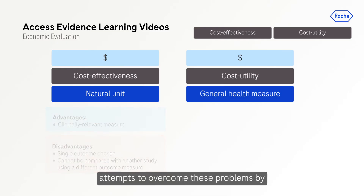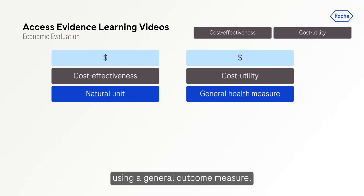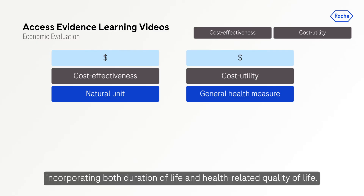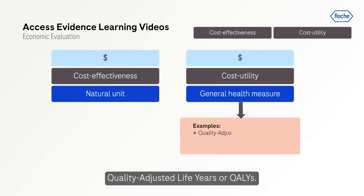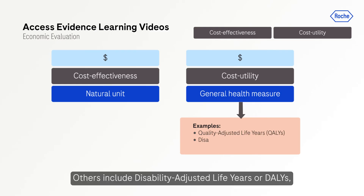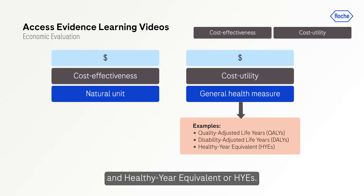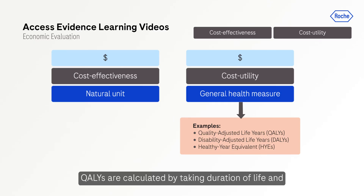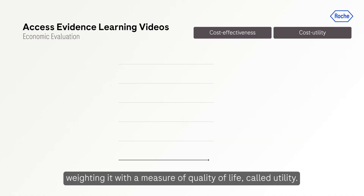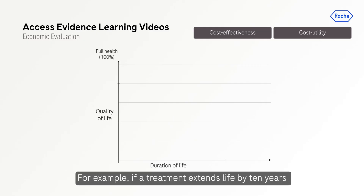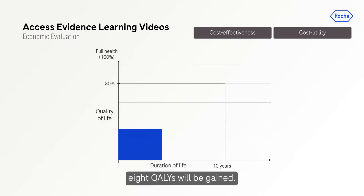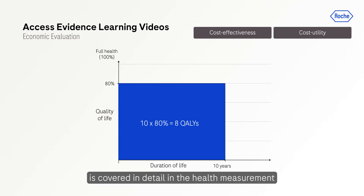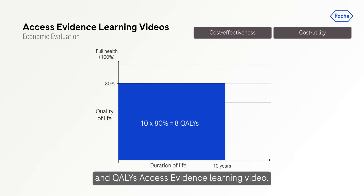Cost-utility analysis attempts to overcome these problems by using a general outcome measure incorporating both duration of life and health-related quality of life. The most commonly used measure is quality-adjusted life years, or QALYs. Others include disability-adjusted life years (DALYs) and healthy year equivalents (HYEs). QALYs are calculated by taking duration of life and weighting it with a measure of quality of life called utility. For example, if a treatment extends life by 10 years with a quality of life that is 80 percent of full health, eight QALYs will be gained. Combining duration and quality of life is covered in detail in the Health Measurement and QALYs Access Evidence learning video.